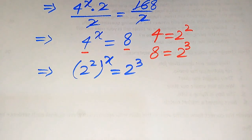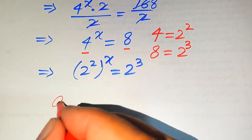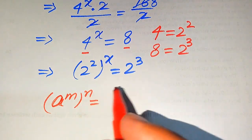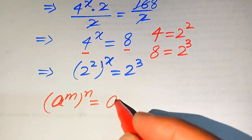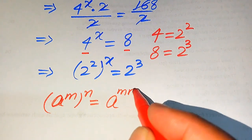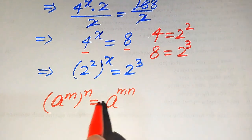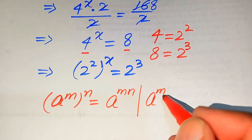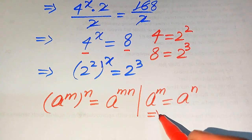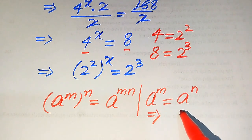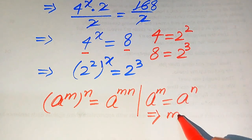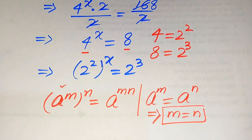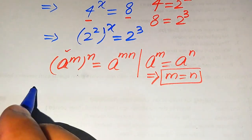We use the exponential law: a to the power of m to the power of n equals a to the power of m times n — when you have an exponent raised to an exponent, the two exponents are multiplied. We also use the rule that if a to the power of m equals a to the power of n and the bases are the same, then we equate the exponents: m equals n.